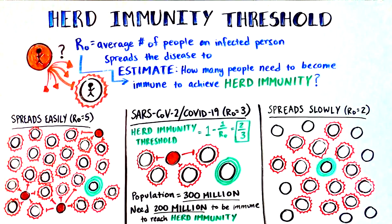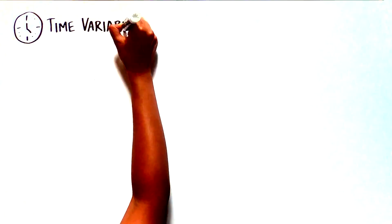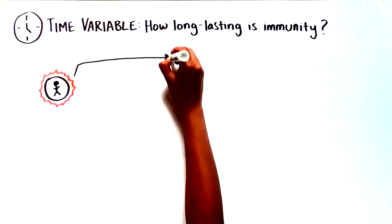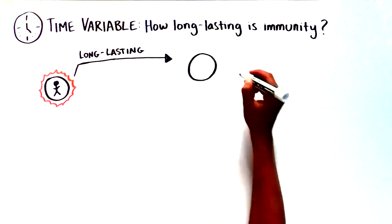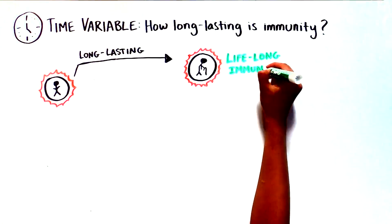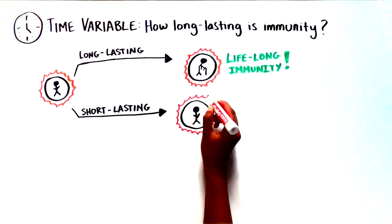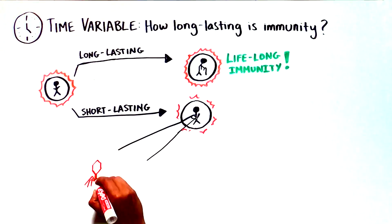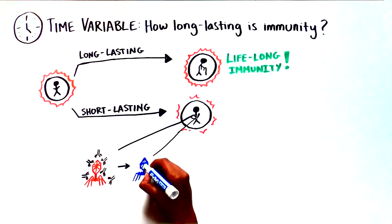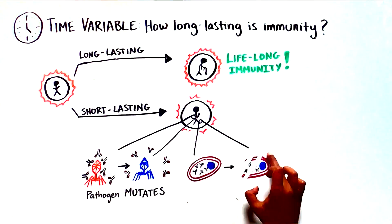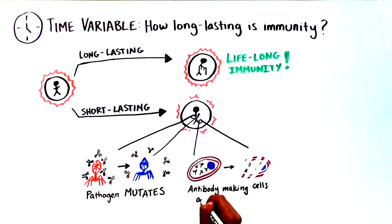So how infectious a pathogen is matters. Another important variable is time. Although immunity to some pathogens is long-lasting, and in some cases lifelong, immunity to other pathogens can wane over time, either because the pathogen mutates to avoid the antibodies, or because the cells that make protective antibodies are lost.